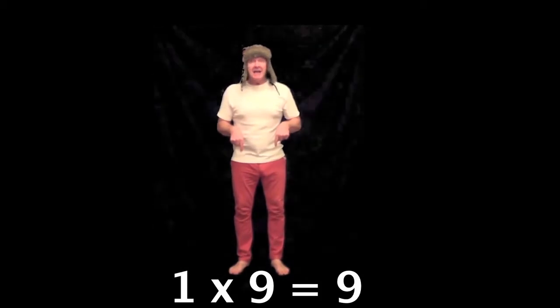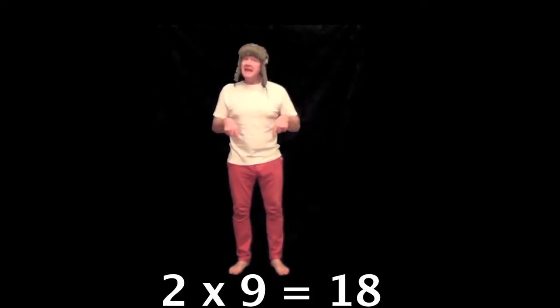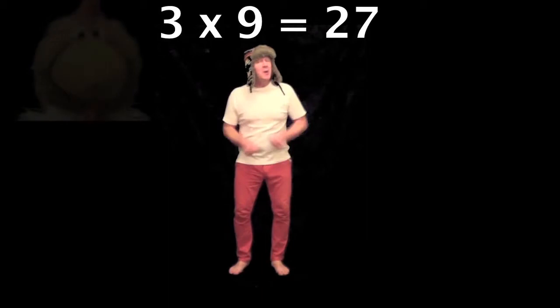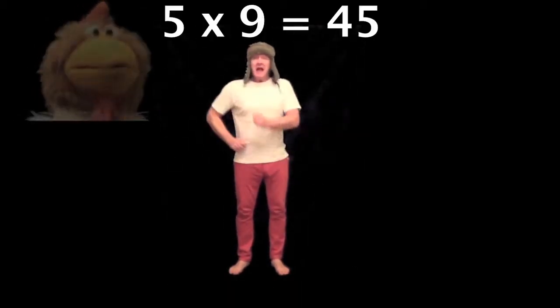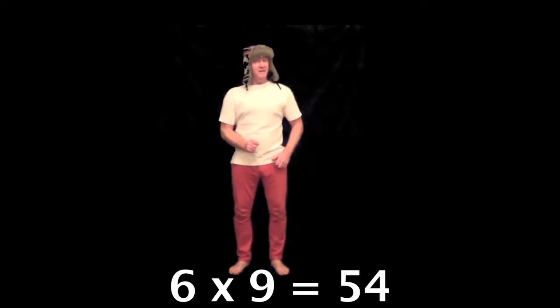1 times 9 is 9, 2 times 9 is 18, 3 times 9 is 27, 4 times 9 is 36, 5 times 9 is 45, 6 times 9 is 54.